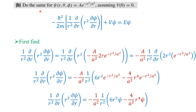The next part: do the same for wave function psi equal to A·e^(-r²/a²), assuming V(0) equals 0 — that is, when r equals 0 the potential is 0. Based on this condition, find the energy eigenvalue and potential V(r). The Schrödinger wave equation when psi depends only on r uses the radial part of the Laplacian: minus h-cross²/2m times (1/r²)(∂/∂r)(r²·∂ψ/∂r) plus V·psi equals E·psi.